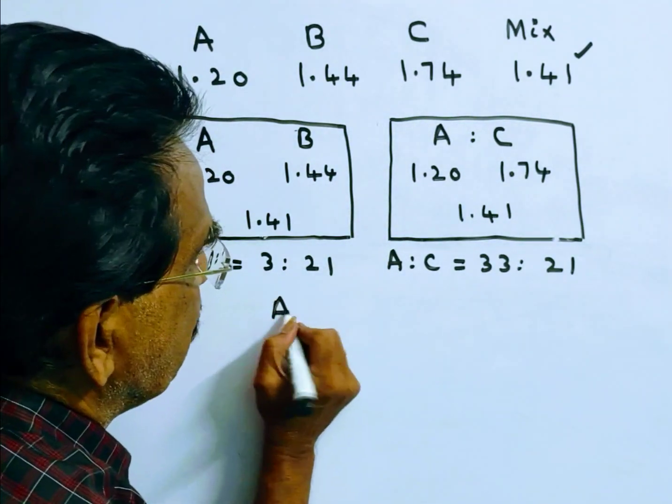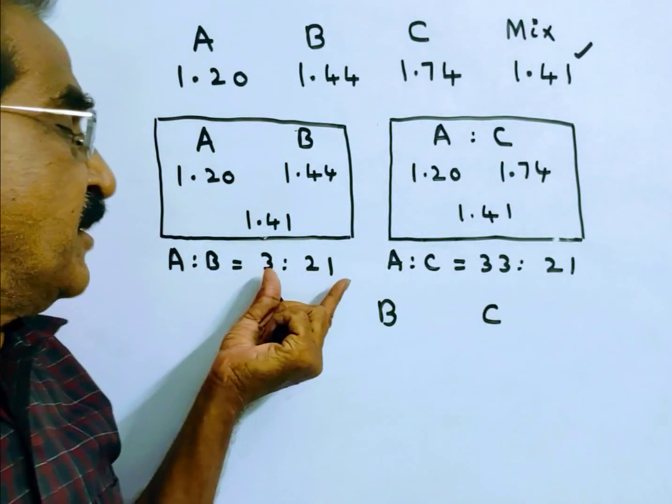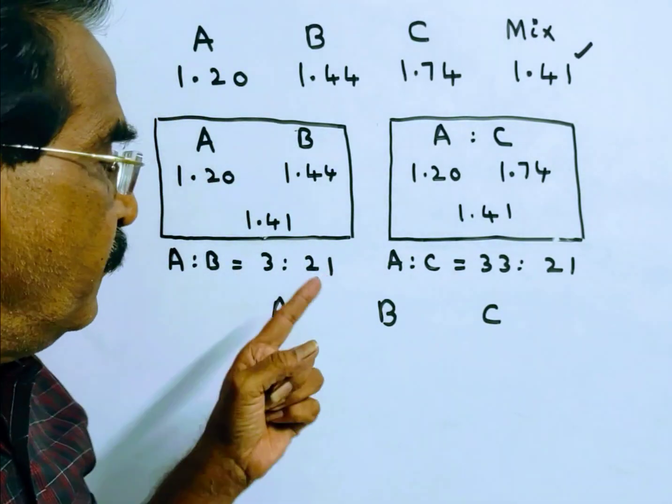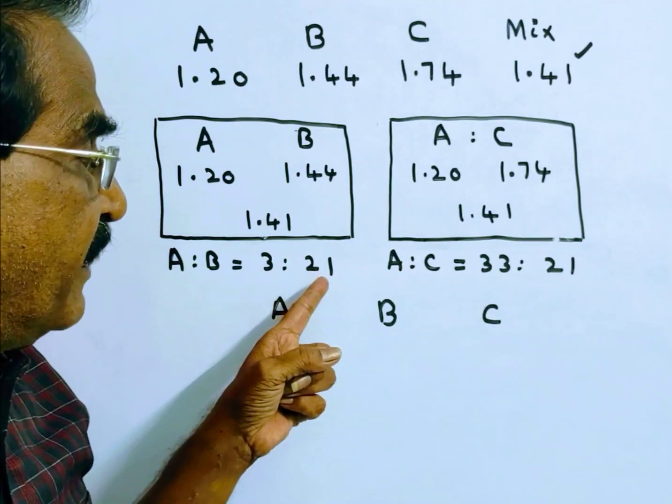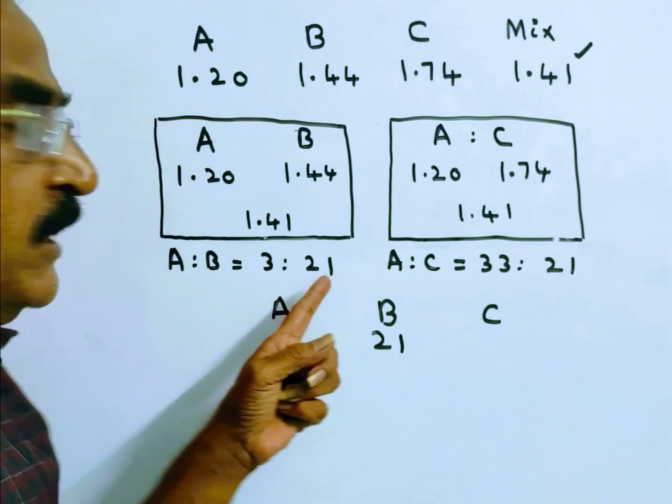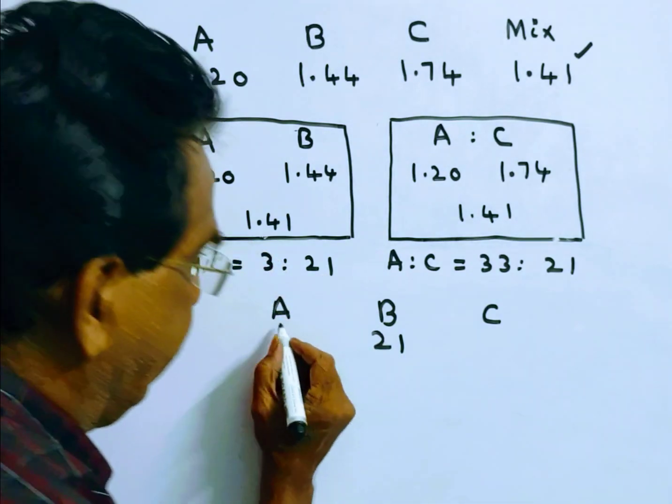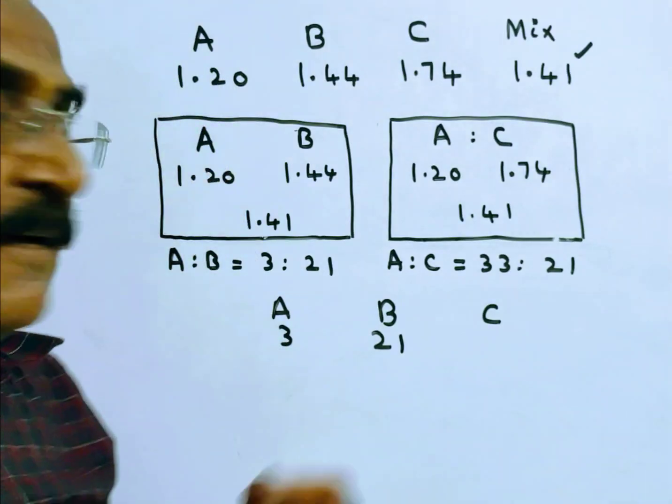From the first ratio, it is clear that for every 21 cases of type B, we have to take 3 cases of type A.